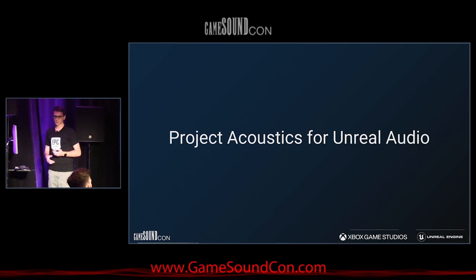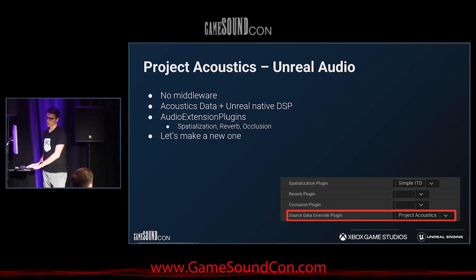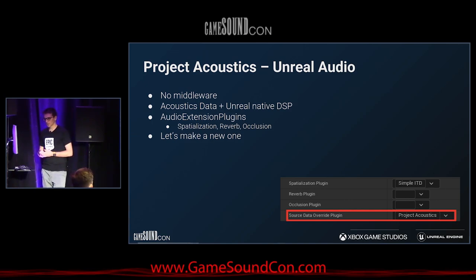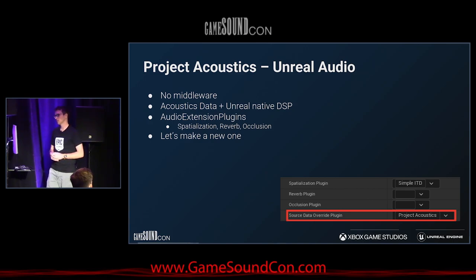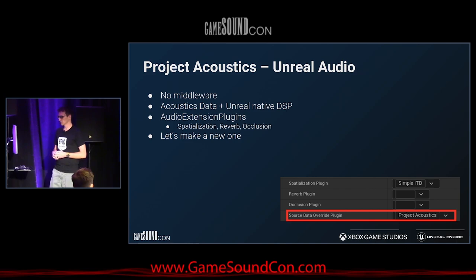Our first offering for Project Acoustics used Wwise, but something we've always wanted is to use Project Acoustics natively in Unreal without a dependency on external middleware. We started working with Epic about a year ago. In Unreal, there are audio extension plugin interfaces — Spatializer, Reverb, and Occlusion — but these expect you to provide DSP, and we wanted to use as much Unreal native DSP as possible. So Epic and us came up with a new one: the Source Data Override Plugin. It was in the source code in about a week — really cool to work with them.